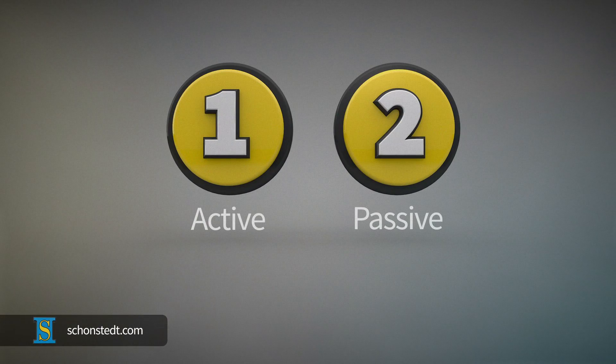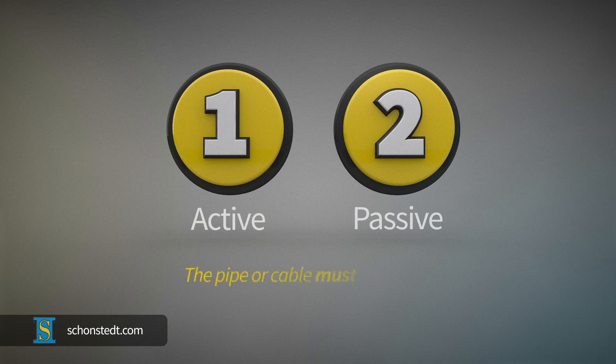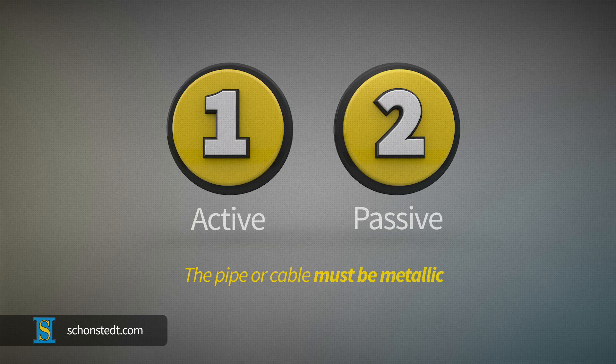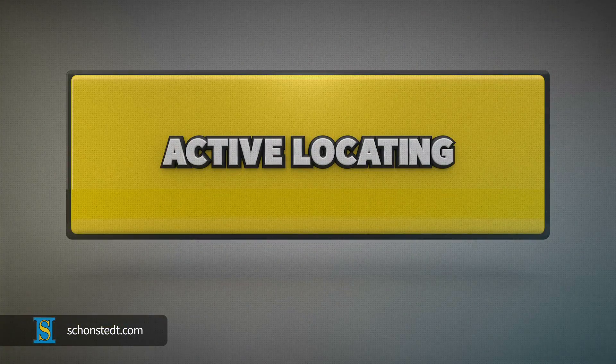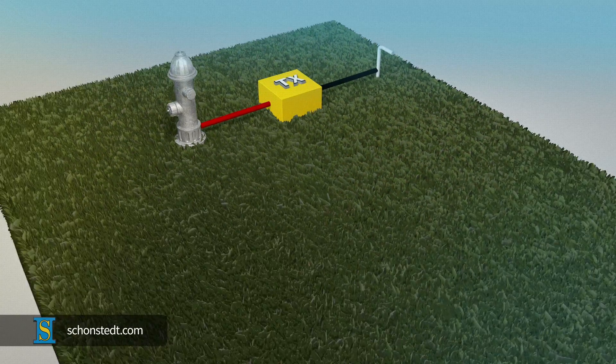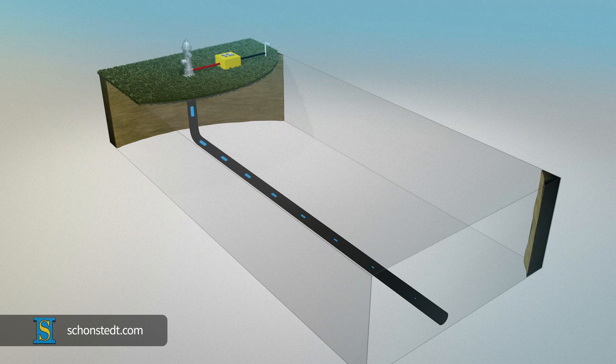There are two methods of pipe and cable locating, both of which require the pipe or cable to be able to conduct electricity. In other words, they must be metallic. The first method is known as active locating because a transmitter is used to impose the circulation of an electric current on the pipe or cable.